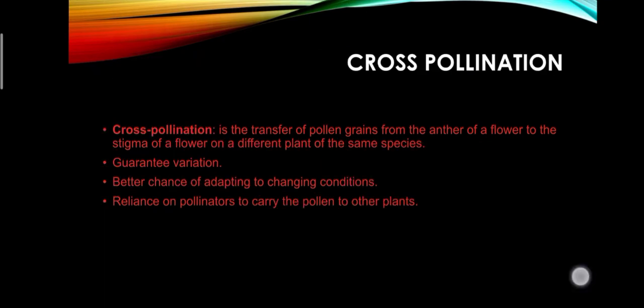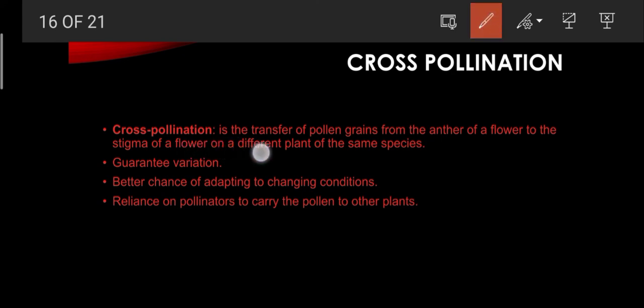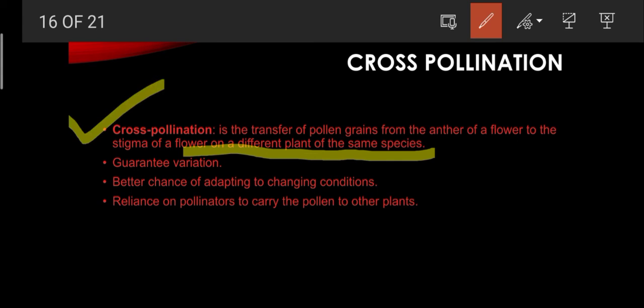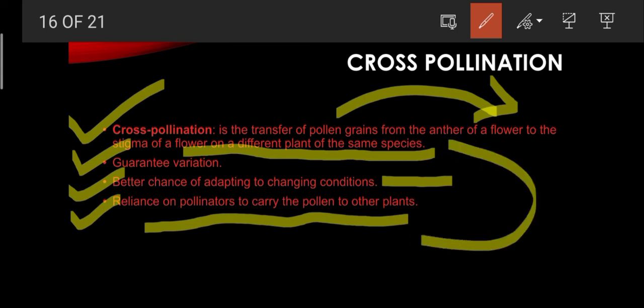In cross-pollination, pollen grains are transferred from the anther of a flower to the stigma of a flower on a different plant of the same species. Cross-pollination guarantees genetic variation and better chances of adapting to changing conditions, but it relies on pollinators to carry the pollen to other plants of the same species.